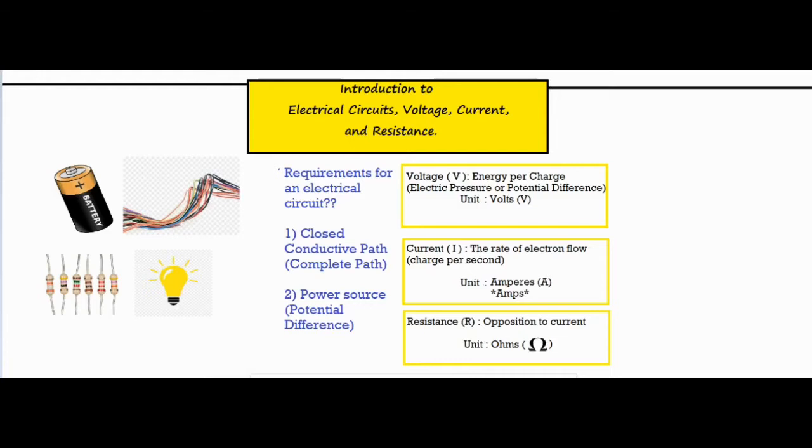So say for example we draw a simple circuit like this that has a battery, wires, a light bulb, and then wires coming back to the other terminal of the battery. We have both of our components here which is a closed path. The closed path is right here as you can see, it makes some sort of loop where the electrons can continue to get energy from the battery and then flow through the entire circuit. And then we clearly have a power source which is the battery itself.